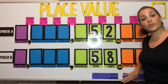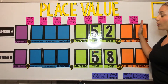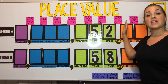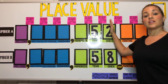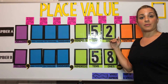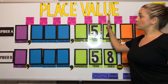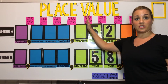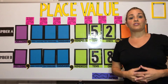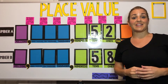Students are also going to start understanding that every digit is going to be ten times greater than the place to its right. So as you're moving from digit to digit, each value of the digit is increasing ten times.